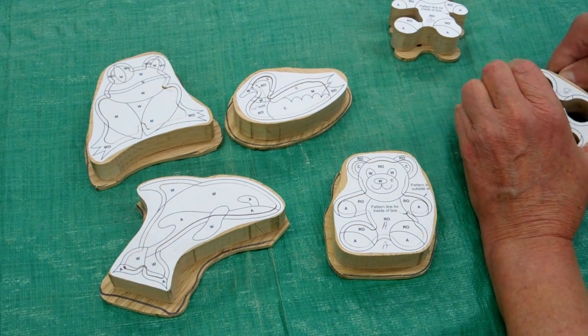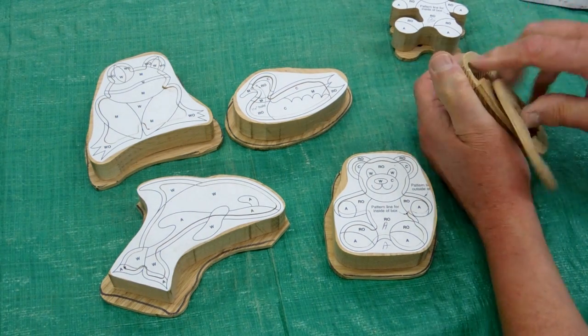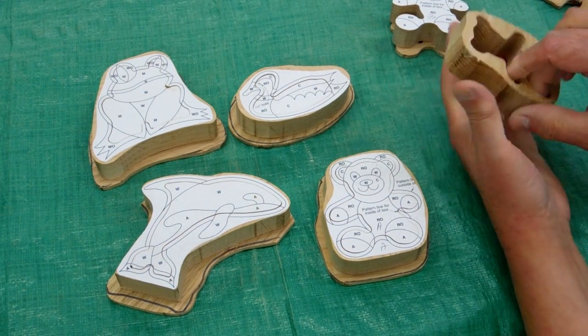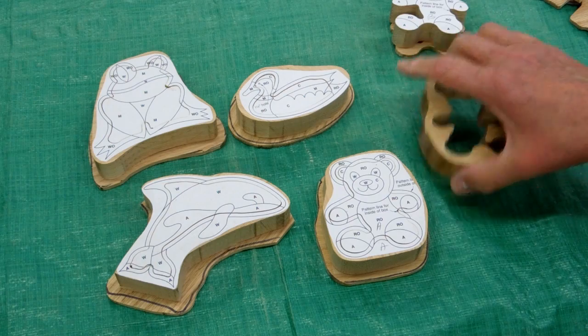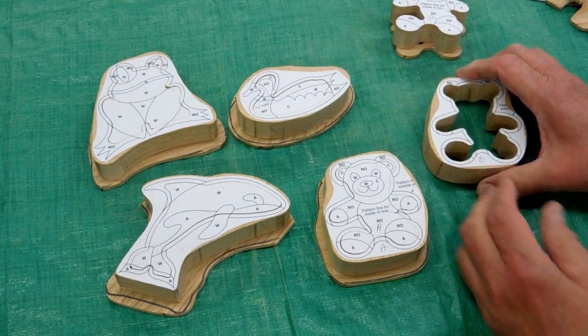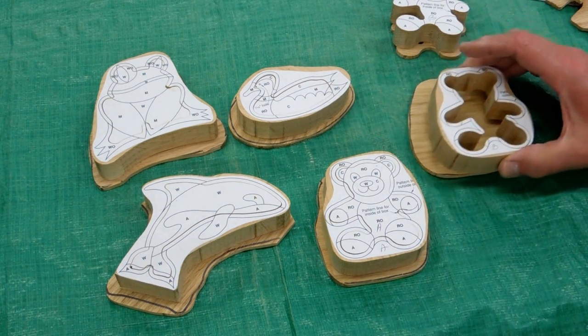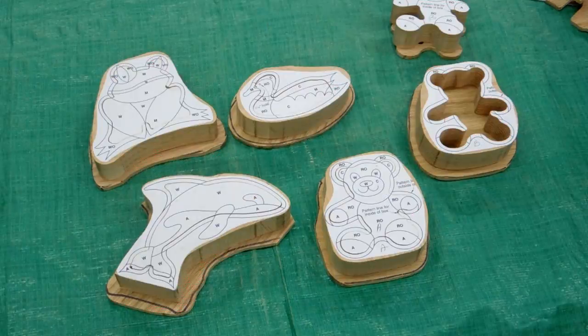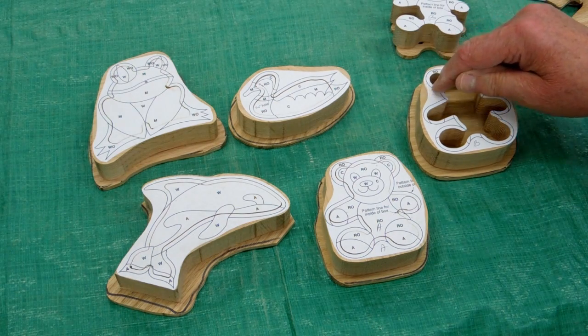I'll pry this piece off and remove the tape. I'll glue this onto this other piece of wood. When it's dry we'll cut this out to the outside line.